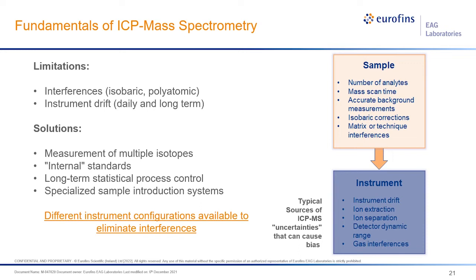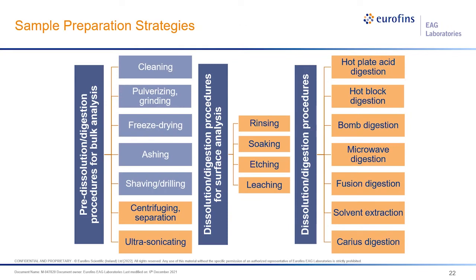Use of several internal standards and long-term statistical process control protocols mitigate other limitations. Sample preparation is a critical step in chemical analysis. Here we have an overview of the more common approaches: pre-digestion for bulk analysis on the left, strategies for surface sampling in the middle, and methods for complete digestion or dissolution of the sample on the right. Each method must be rigorously tested for efficacy and carried out in safe environments using tools that minimize risk of potential contamination. The combination of complete dissolution or digestion of a material with ICP-based techniques is therefore unique and extremely powerful.